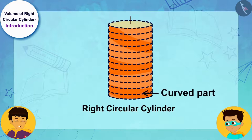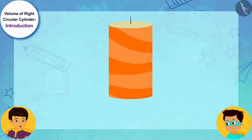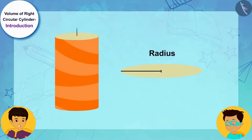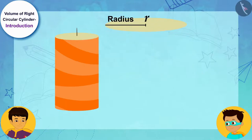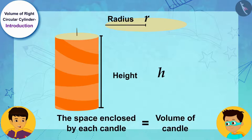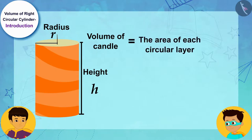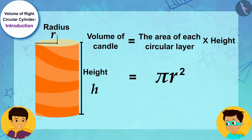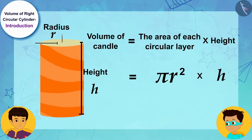Each candle is a right circular cylinder because its curved part is perpendicular to its base. Imagine that each candle is made of thin circular layers of negligible thickness, and the radius of each circular layer is r. If the height of each candle is h, then the volume will be equal to the area of each circular layer multiplied by its height. The area of each layer is equal to π r squared.